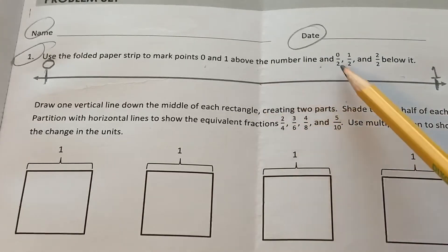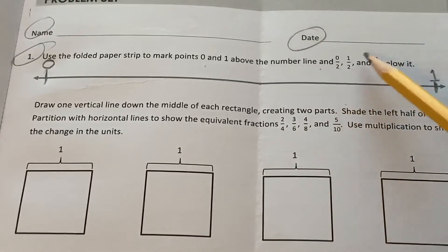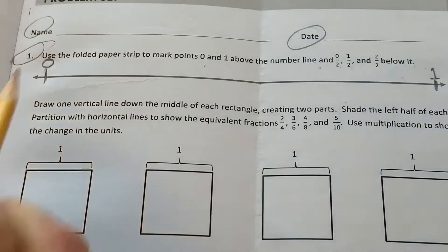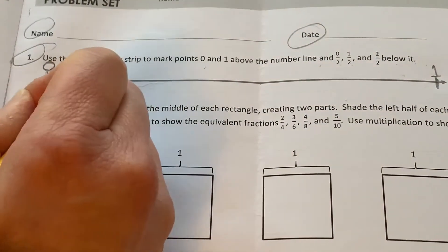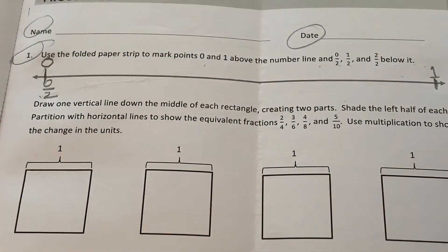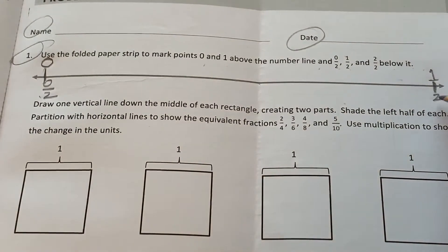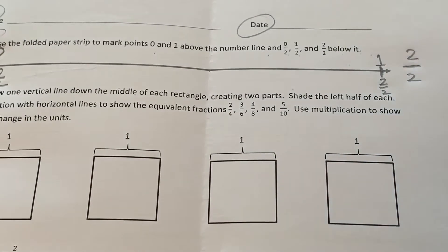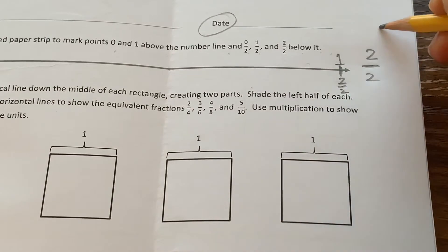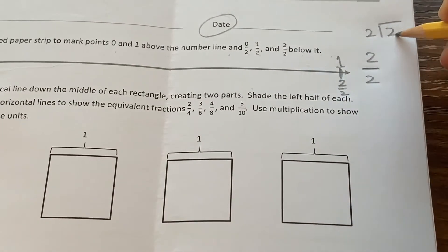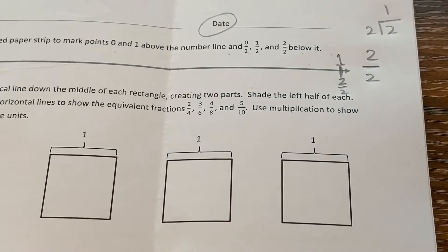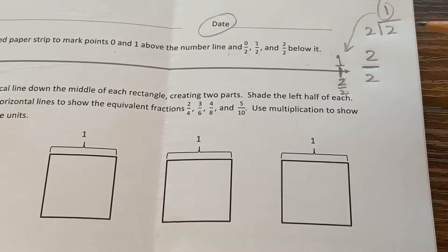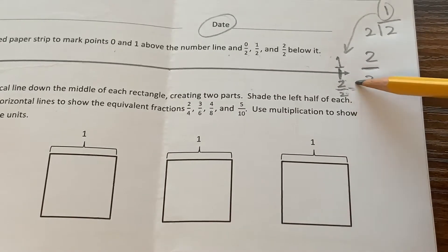And then it says to mark 0 halves, 1 half and 2 over 2 below it. Okay, so this is 0, this is going to be 0 over 2. And if this is 1, this will be 2 over 2. How do I know that? Because, remember, this line is a division line. So if I were to flip it, 2 divided by 2 is 1, 1 whole. So whenever you have two of the same numbers on top of each other, when you divide them, they're going to equal 1 whole.